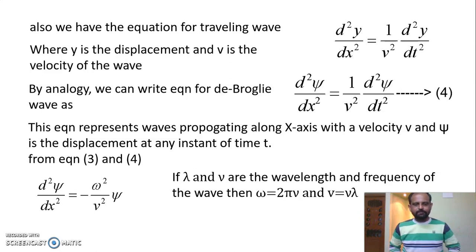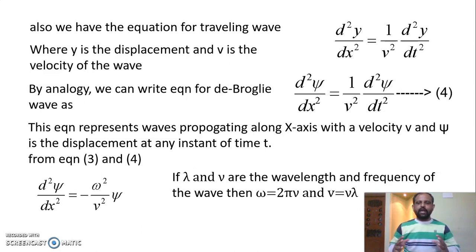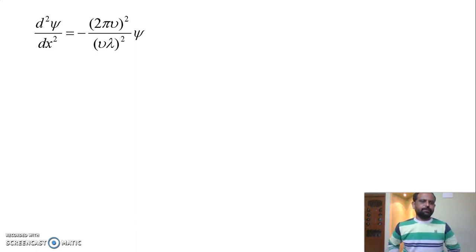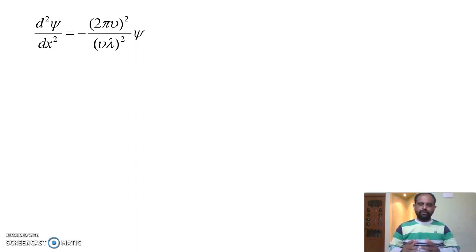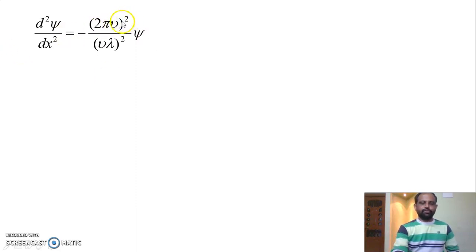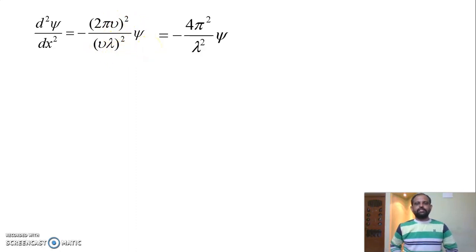Using the relations omega equal to 2π·nu and v equal to nu·lambda, we substitute into the expression. Replacing omega with 2π·nu and v with nu·lambda, we get d²ψ/dx² equal to −(2π·nu)² divided by (nu·lambda)² times psi. The nu² terms cancel, leaving d²ψ/dx² equal to −(4π²/λ²)·ψ.